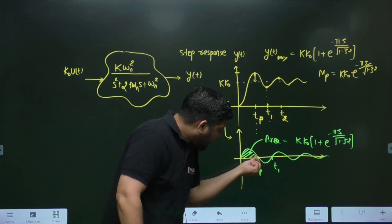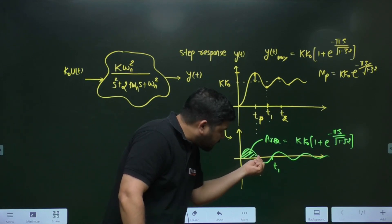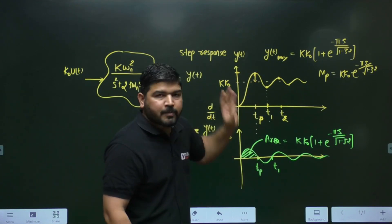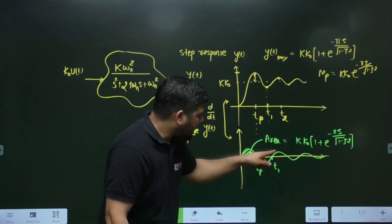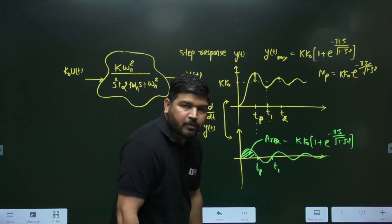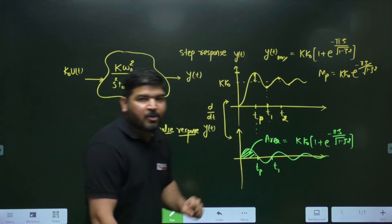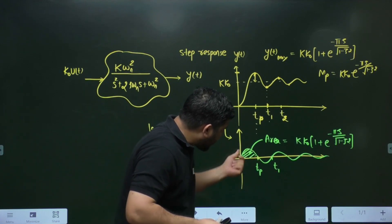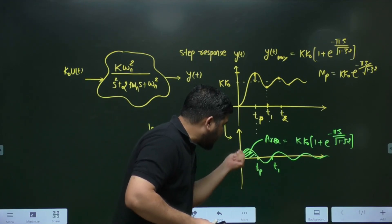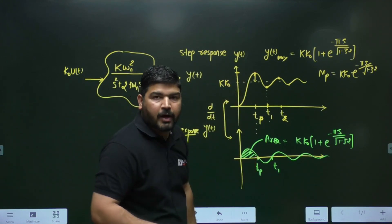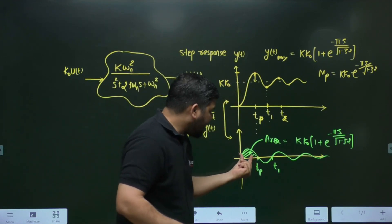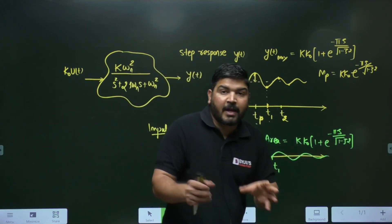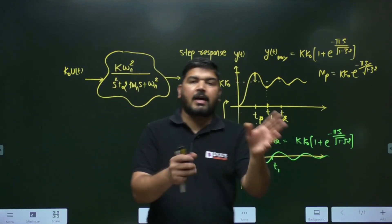In the impulse response, at the time it gives zero value, you get the maximum output in the step response. There is one more interesting point: integration is just the area. So if you take the area under the impulse response from 0 to T_p, that area represents the maximum height KK0·(1 + e^(−πζ / √(1−ζ²))). Remember this point, because sometimes they give you the impulse response and ask about the step response.